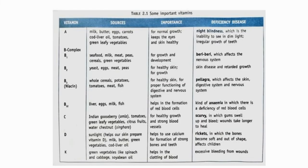Let's look at Vitamin A. The sources of Vitamin A are milk, butter, eggs, carrot, cod liver oil, tomatoes, and green leafy vegetables. Vitamin A is important for normal growth; it keeps our eyes and skin healthy. If there is a deficiency of Vitamin A, the disease that occurs is night blindness — the inability to see in dim light — and irregular growth of teeth may also happen.